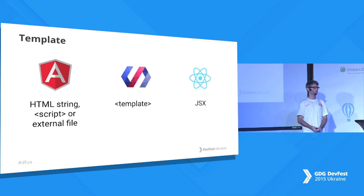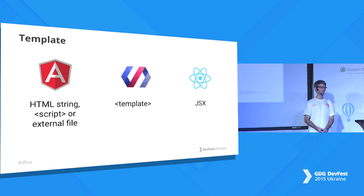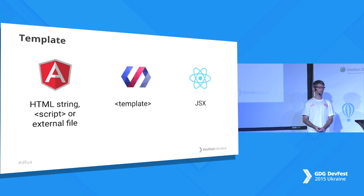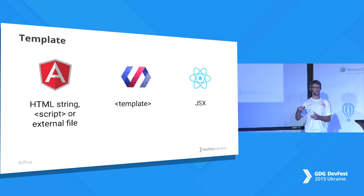Now I'll talk about templates. Angular uses three ways to define templates: HTML strings, script tags, or external files. But Polymer uses the W3C standard template tag, which allows you to render the content of your elements — it's a standard that should eventually be implemented by every browser. React uses JSX, which as we've already seen is a way to write HTML-like syntax in JavaScript — though it's not actually HTML, just HTML-looking.